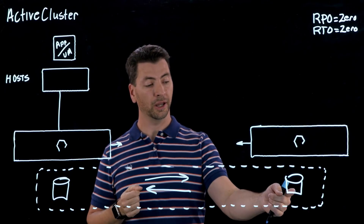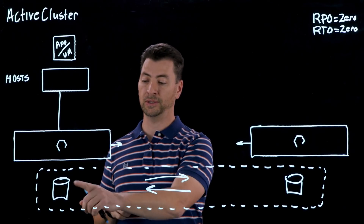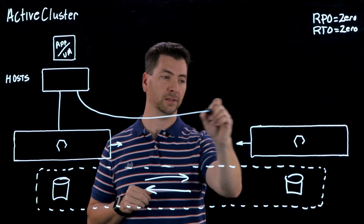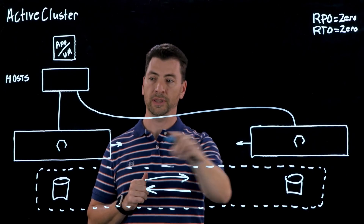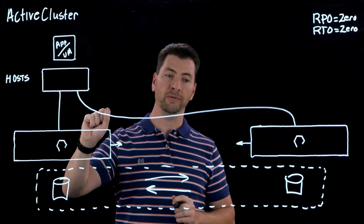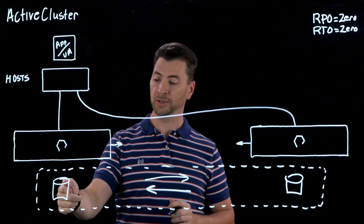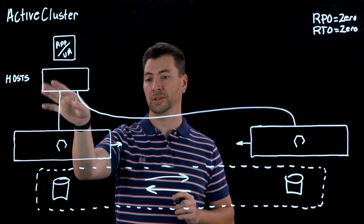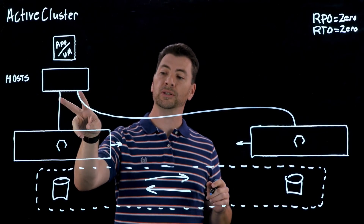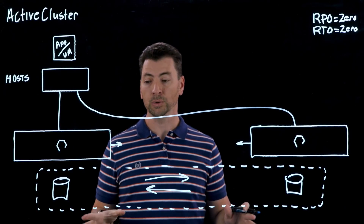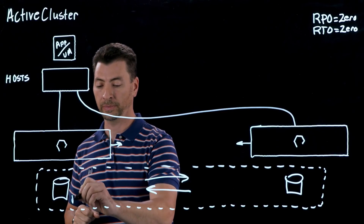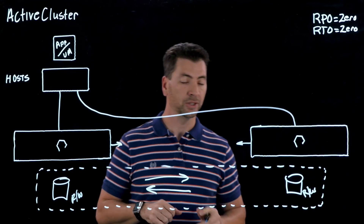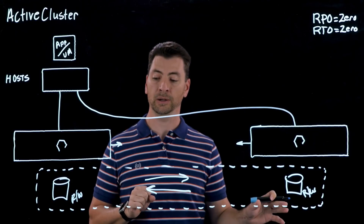This LUN that has been created on the second array has the exact same LUN serial number as the original LUN. That means we could take this same host, connect it to the array over here, and expose this LUN to that same host. From the host perspective, all it sees is that we've added more paths — the same LUN serial number appears on both paths. When the host discovers all these paths it will simply think it has more paths to the LUN, and it's free to do IO — both reads and writes — on either side of the Active Cluster. There is no notion of a passive LUN, secondary LUN, or standby LUN.